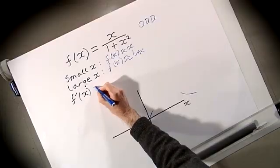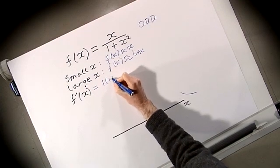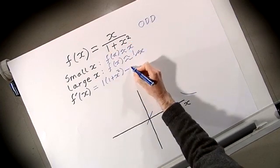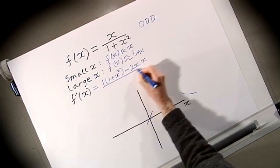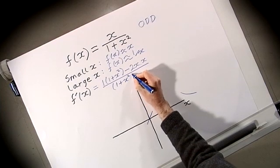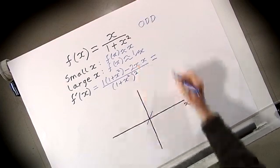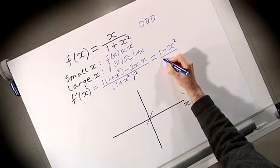To find out more about the function we look at the derivative f'(x), working it out using the quotient rule. We get [1·(1 + x²) - 2x·x] / (1 + x²)², and simplifying the numerator gives 1 + x² - 2x², so f'(x) = (1 - x²) / (1 + x²)².